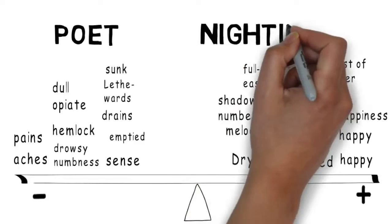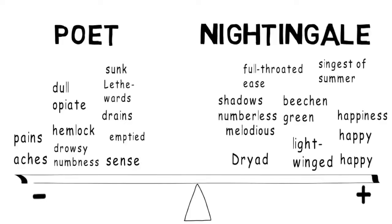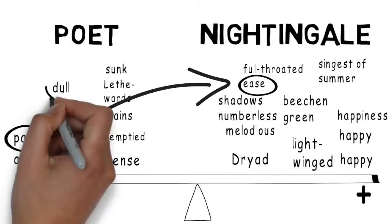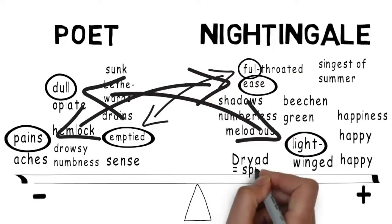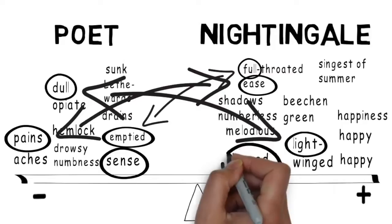But it goes even further than that. We can see some very specific contrasts between these two groups of words. The most basic contrast perhaps is between the word 'pains' in the first half of the stanza and the word 'ease' in the second half. And we can see other contrasts: dull and light, emptied and full, dryad representing the spirit, and sense the world of the physical body. If you look hard enough you'll find more contrasts of this kind.